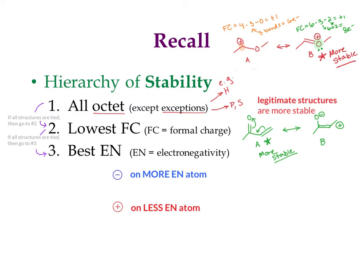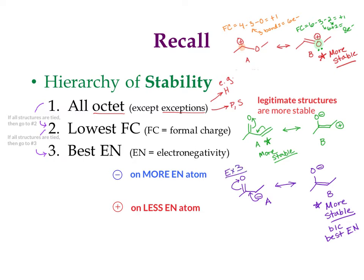That's because more electronegative atoms like electrons more, and negative charges have more electrons. For example, if I have a negative charge on either an oxygen or a carbon — and both would be all octet with the same formal charge magnitude — I would pick the negative to be on the oxygen instead of on the carbon, because oxygen is more electronegative.